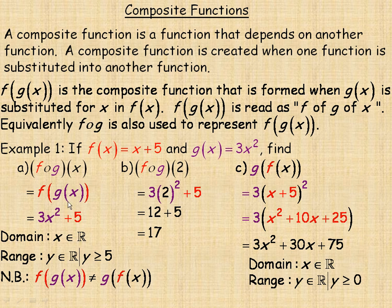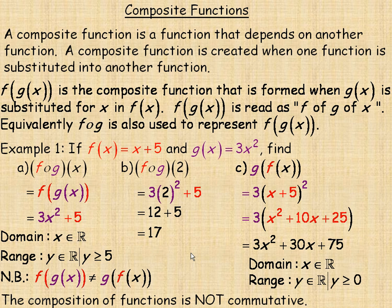Notice that f of g of x and g of f of x are not the same. In general, the composition of functions is not commutative — changing the order does not give the same result. This is similar to division with real numbers: 10 divided by 2 is 5, but 2 divided by 10 is one-fifth, not 5.